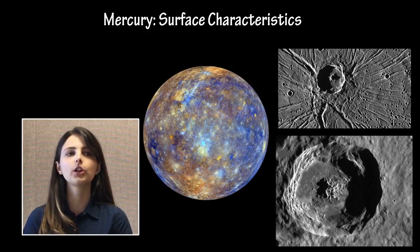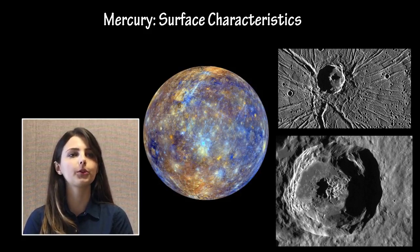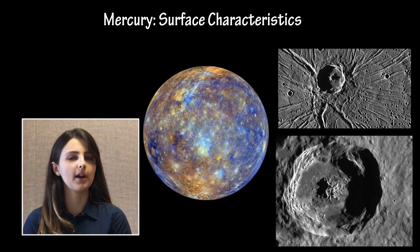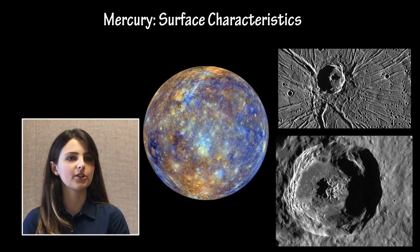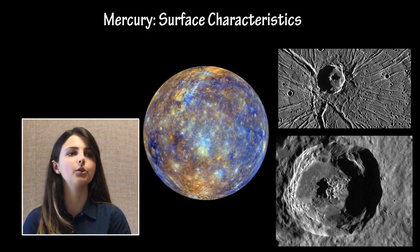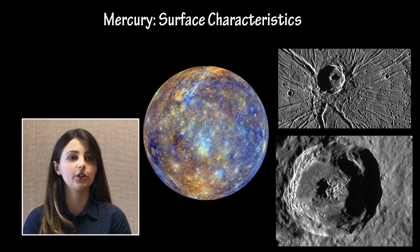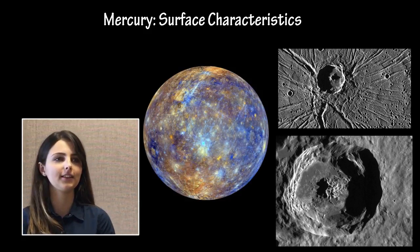Mercury's Caloris basin is its most notable surface feature. Mercury has been studied primarily by the Mariner missions 40 years ago, and the more recent Messenger mission has provided new insights on Mercury's surface geology for the first time in decades.